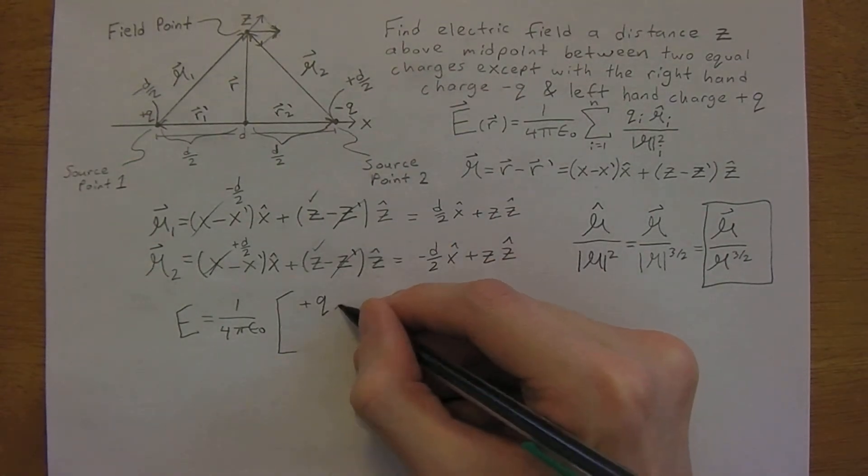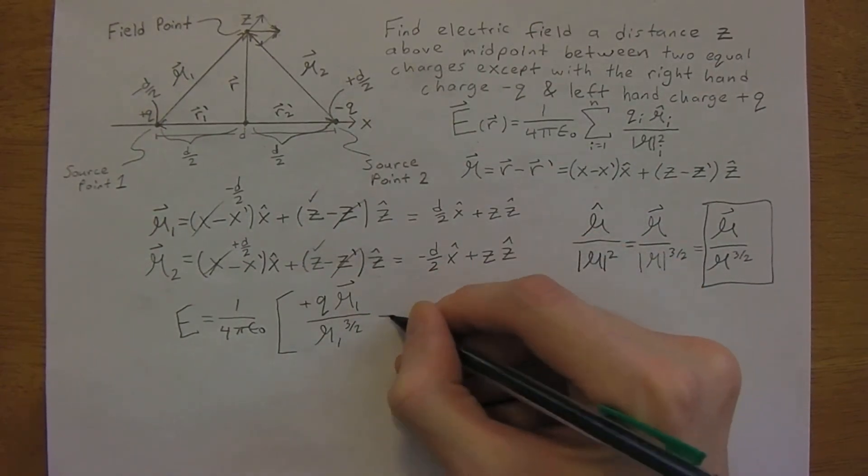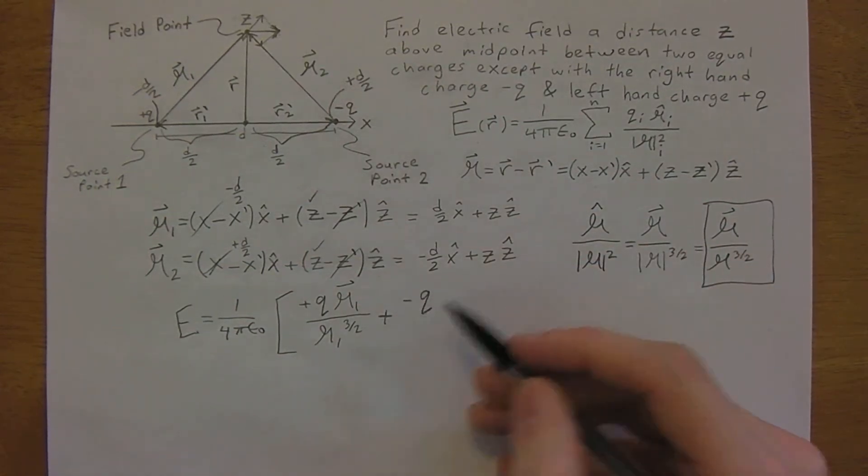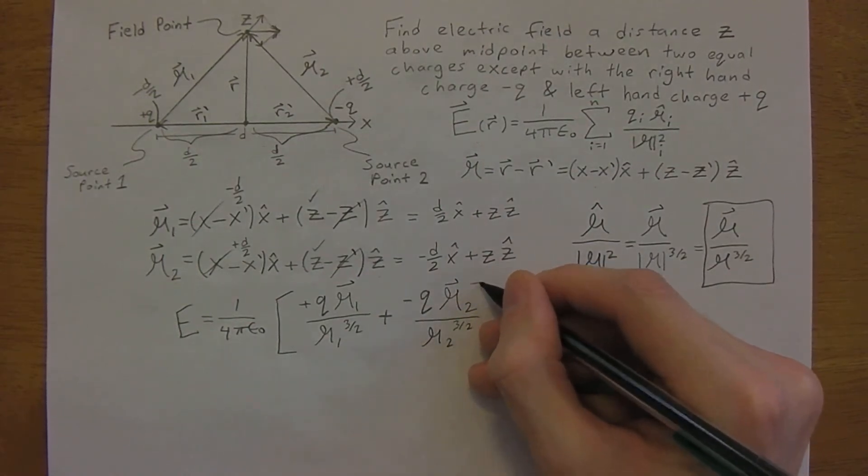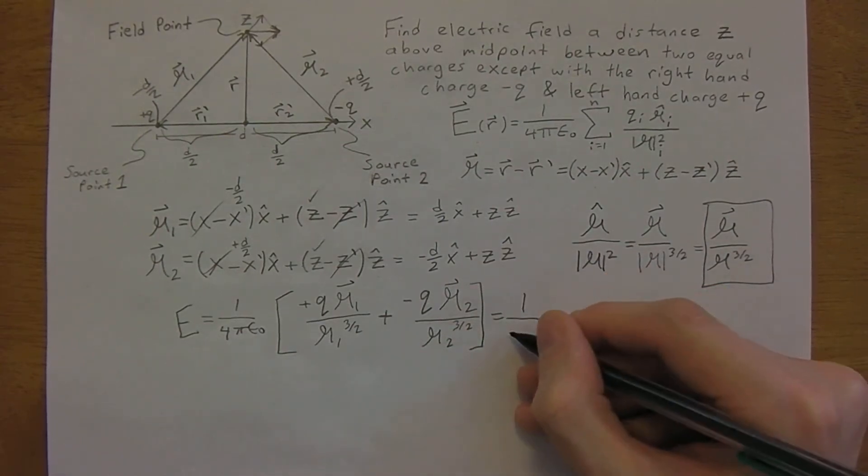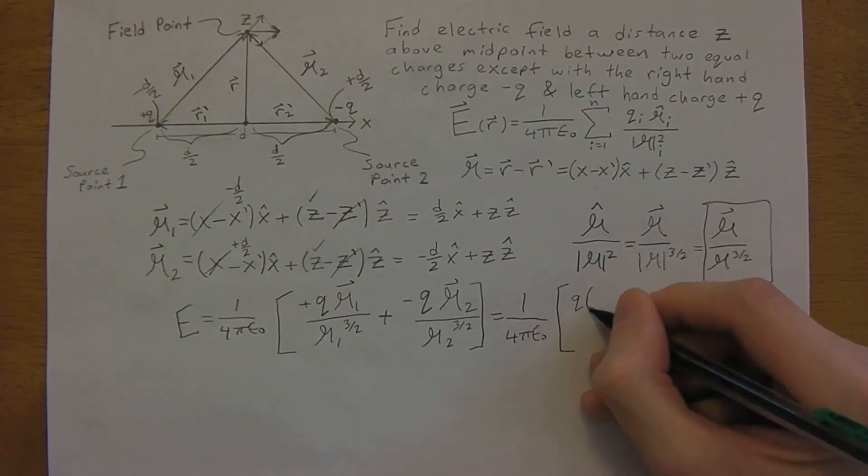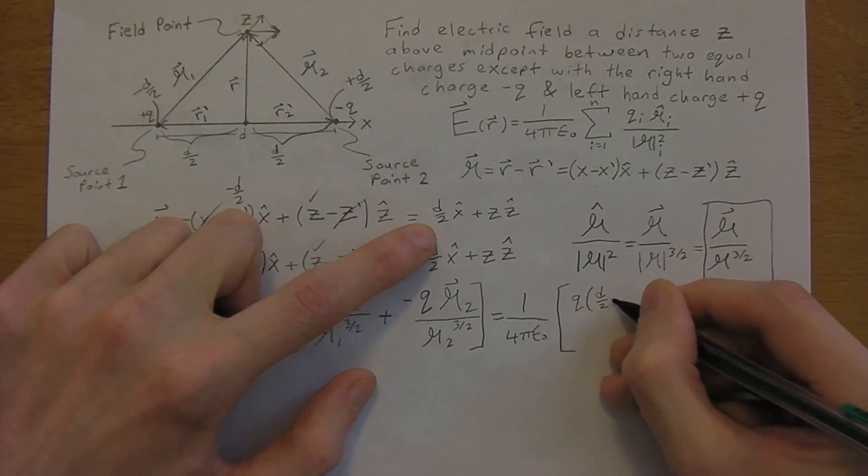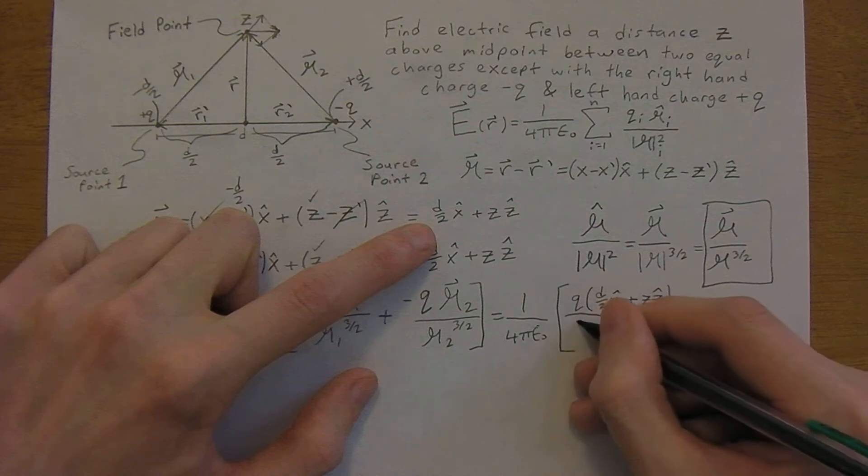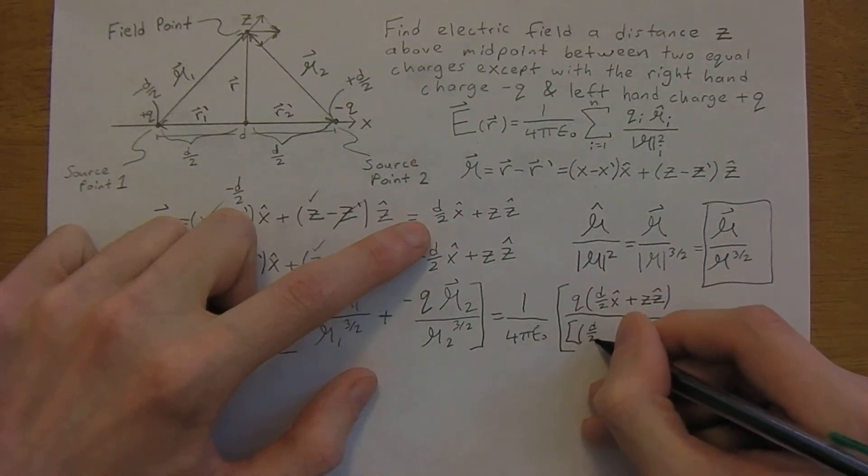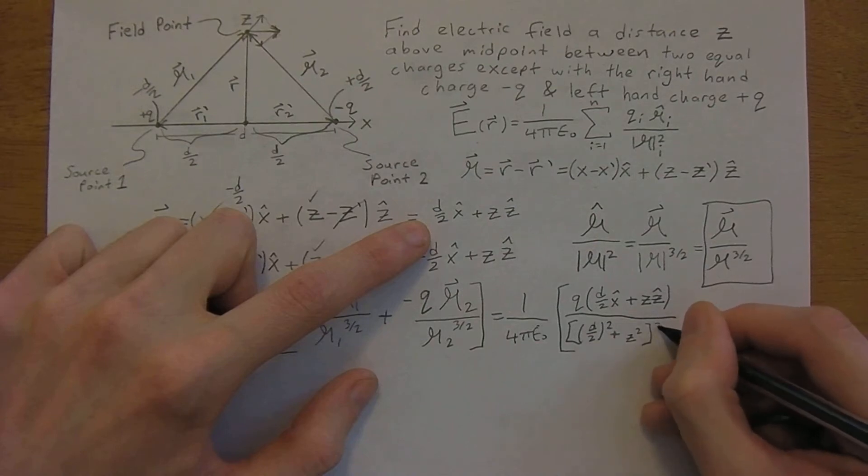And then we have r1 vector over r1 to the 3 halves. But now, so we're going to add them, but notice that we have a negative q, so that's where the difference comes in here. r2 divided by script r2 to the 3 halves power. So when we actually write this out, we get 1 over 4 pi epsilon naught q times r1, which is d over 2 x hat plus z z hat, divided by the magnitude. So we have d over 2 squared plus z squared, up to the 3 halves.